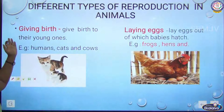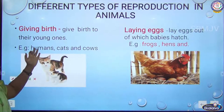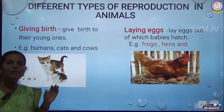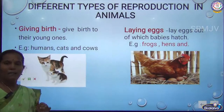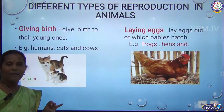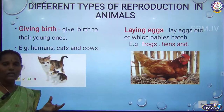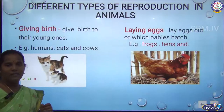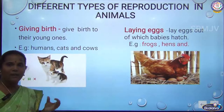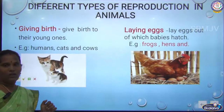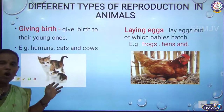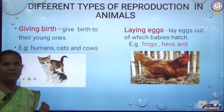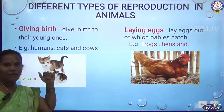For giving birth, the best example is human beings — the baby grows inside the mother's body, fertilization happens, the baby grows in the uterus, and then comes out after growth. Cat, dog, cow, and goat are also examples of animals that give birth to live young.